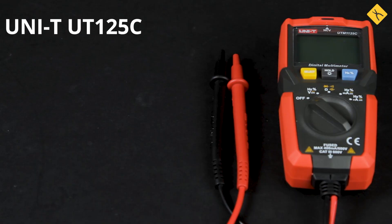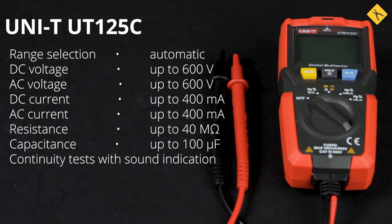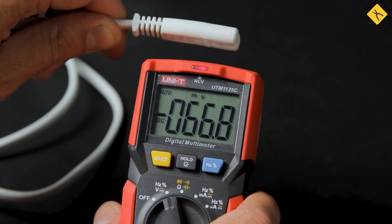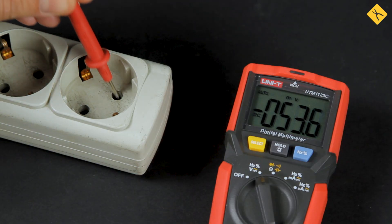Unity UT-125C: Compact size. Fixed measuring probes, which prevent you from connecting them incorrectly. Special notches on the back for fixing the probes. Backlight. All main measurements, NCV, phase detection.